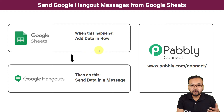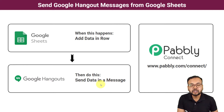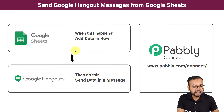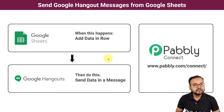Here you can see the flow of the automation: when a person adds data in a row in Google Sheets, a message with the same data is delivered to Google Hangouts automatically. You don't need to manually compile a message, which saves time and energy and improves productivity. To make this happen, we are using Pably Connect, an integration and automation tool — no coding skills or programming knowledge required.